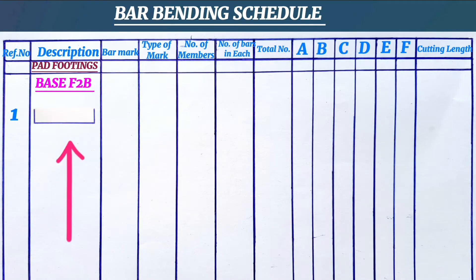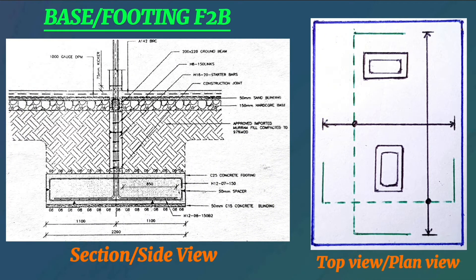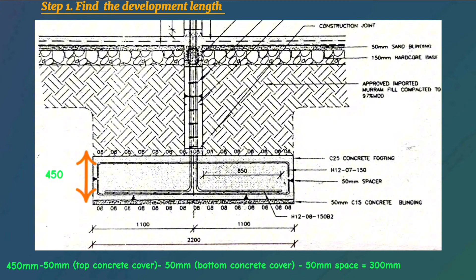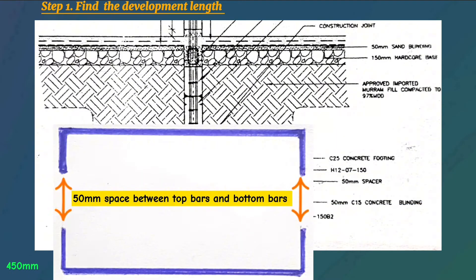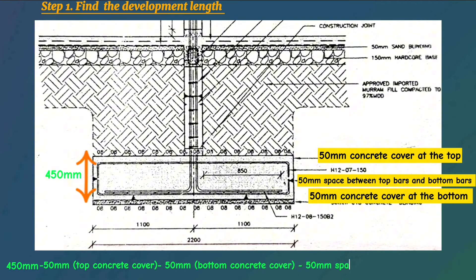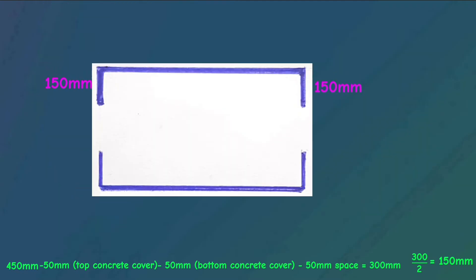Let's begin with base F2B. This is its section, and this is the top view. From the top view, we can confirm the shape of the steel bar for the footing. The thickness of the whole base or footing is 450 millimeters. When we deduct 50mm concrete cover at the top and 50mm concrete cover at the bottom, we remain with 350mm. We then deduct 50mm space between the two development lengths so the top bars and bottom bars do not contact each other. Therefore, 350mm minus 50mm leaves 300mm, divided by 2 gives 150mm — the development length for both top and bottom bars.